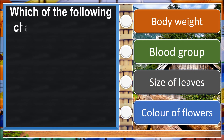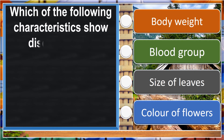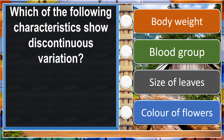Which of the following characteristics show discontinuous variation? Blood group.